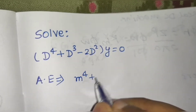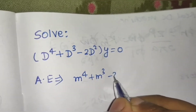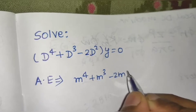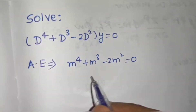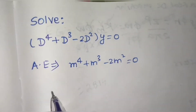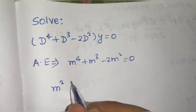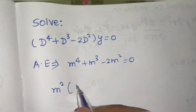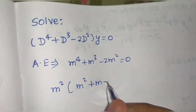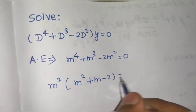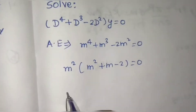Replacing D with m gives us m⁴ + m³ - 2m² = 0. To solve this, we take m² common, giving us m²(m² + m - 2) = 0.